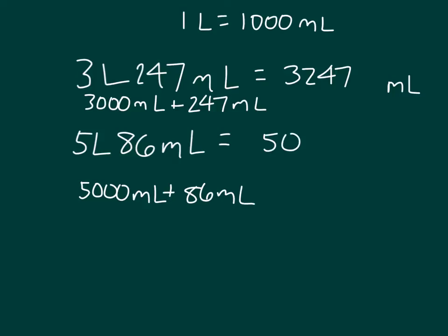That's 5,086 milliliters. And what you can do, and probably should do, is remember to place your commas. That makes it a little easier to read each of those numbers. So 5 liters, 86 milliliters, does equal 5,086 milliliters.